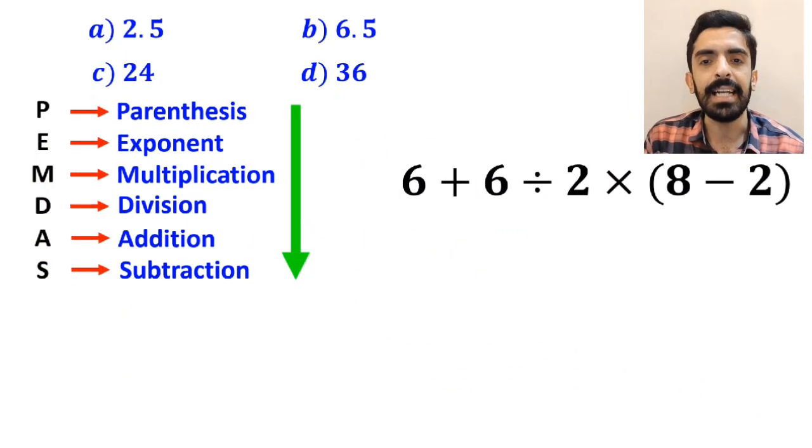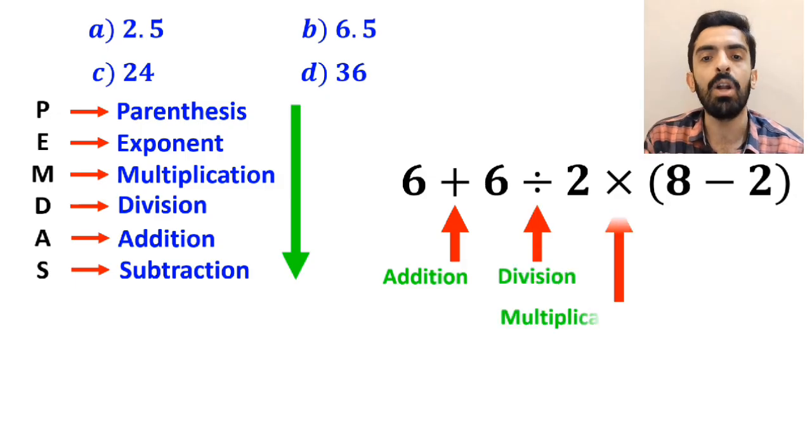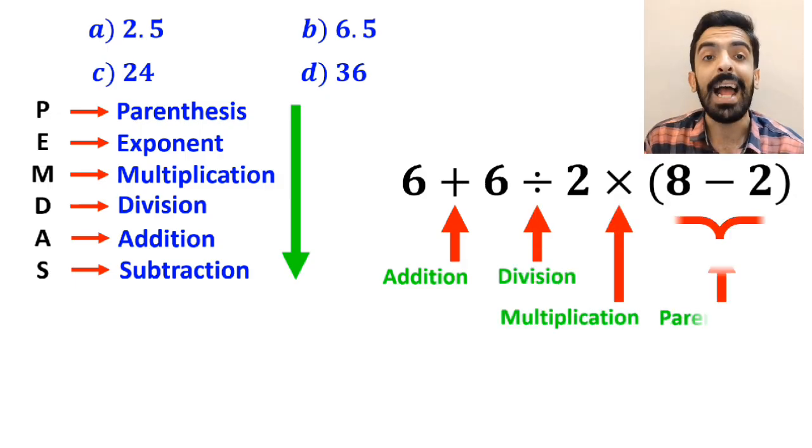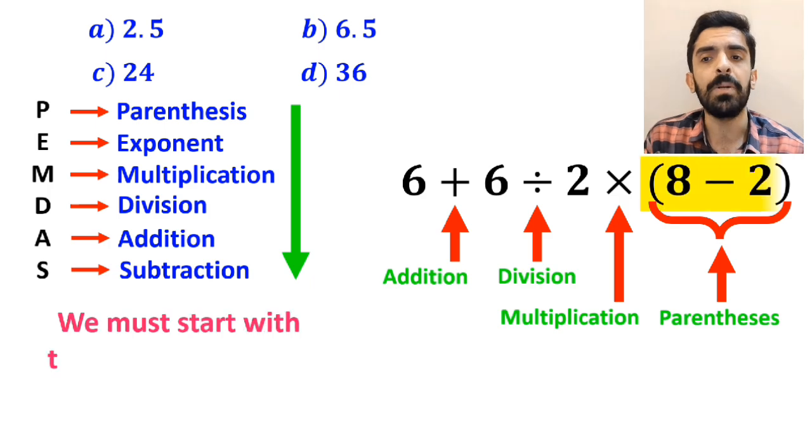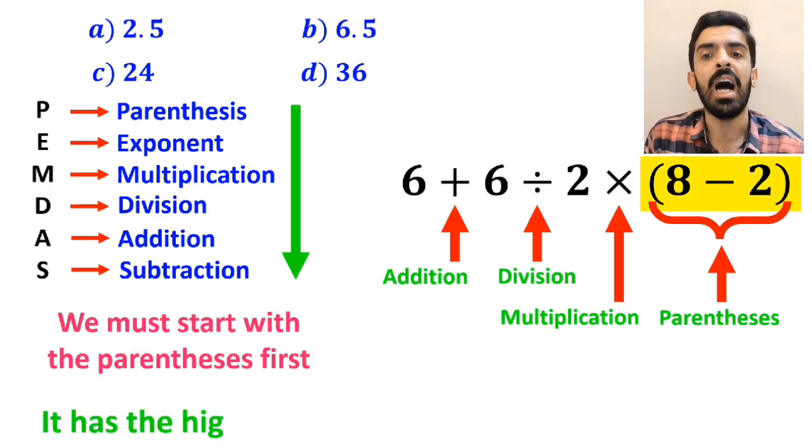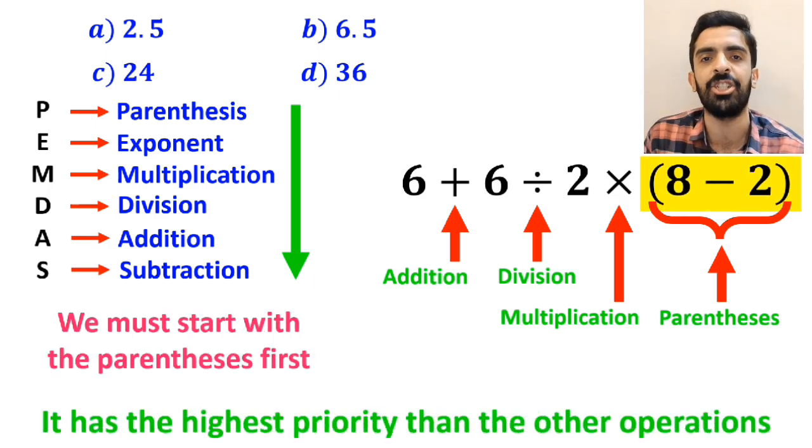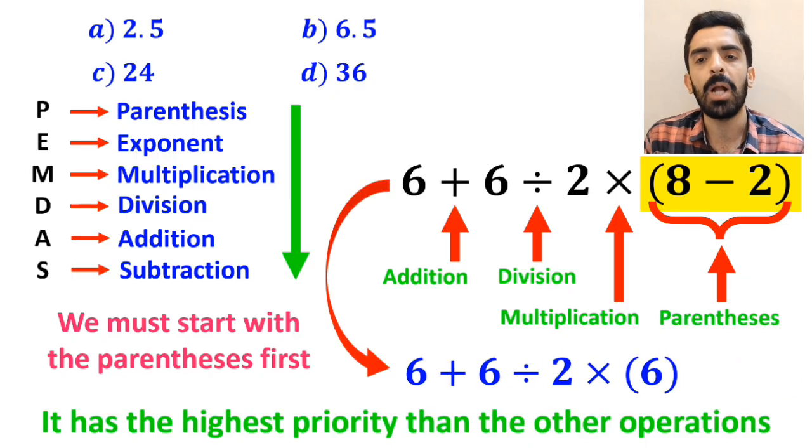Alright, as you can see in the image, in this expression, first we have an addition sign, then a division sign, followed by a multiplication, and finally, parenthesis. We must start with the parenthesis first, because it has the highest priority than the other operations. So, instead of this expression, we can write 6 plus 6, divided by 2, then times 6.